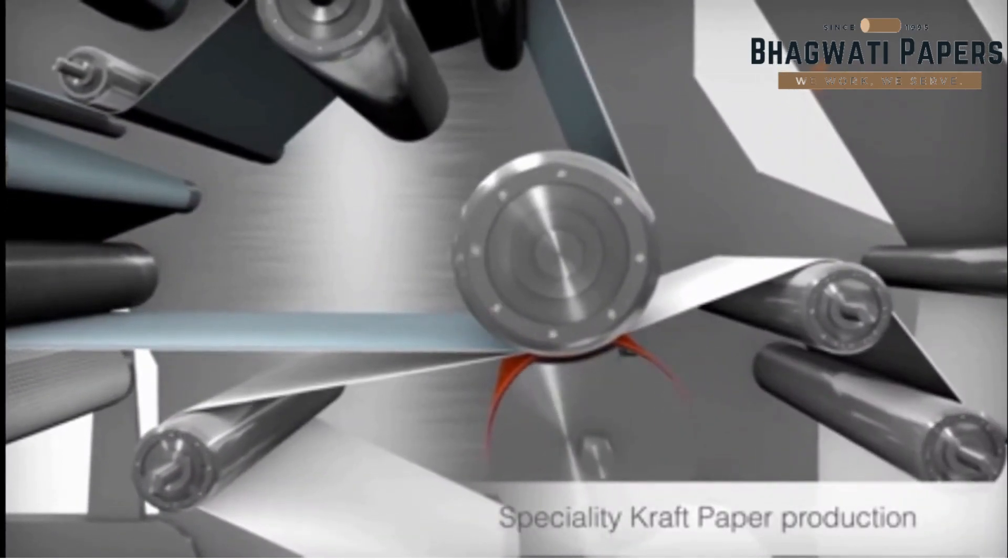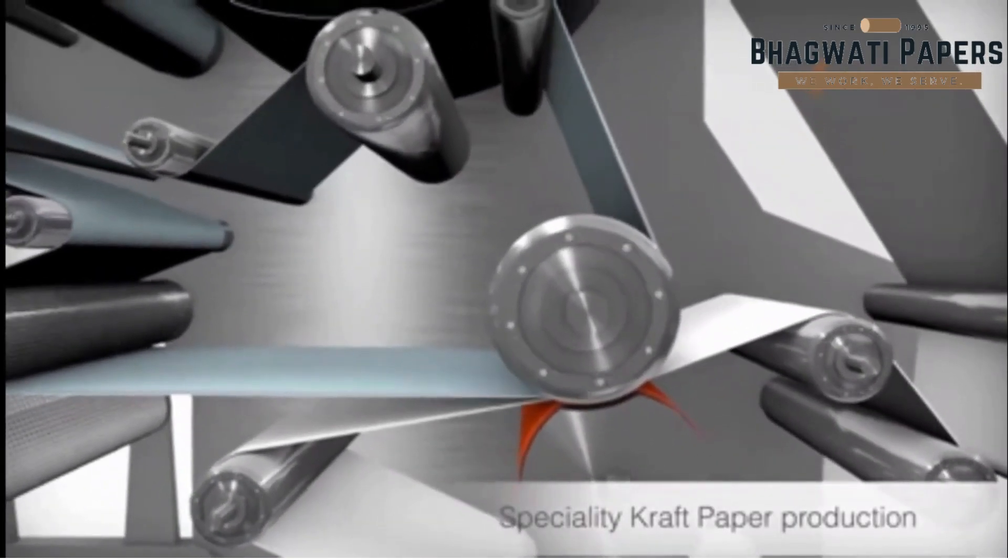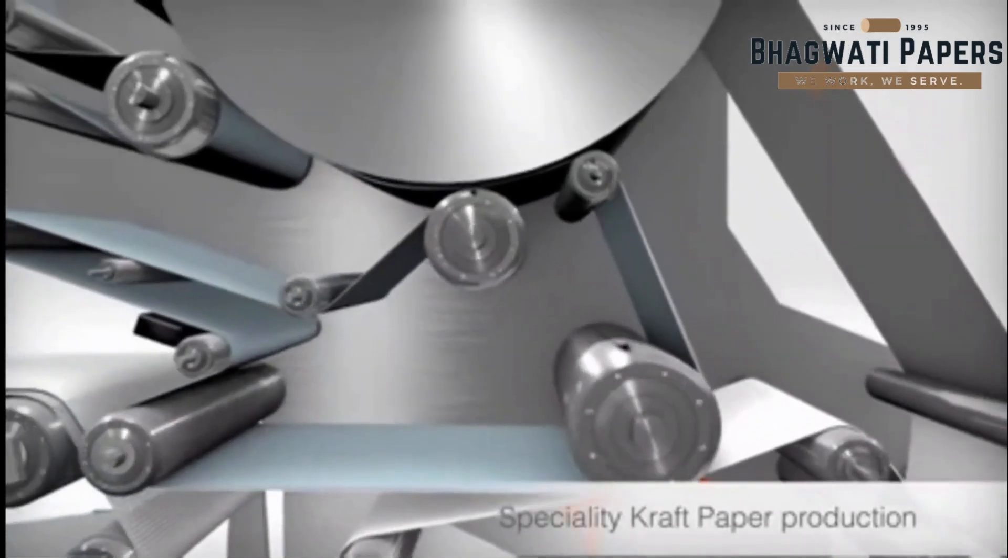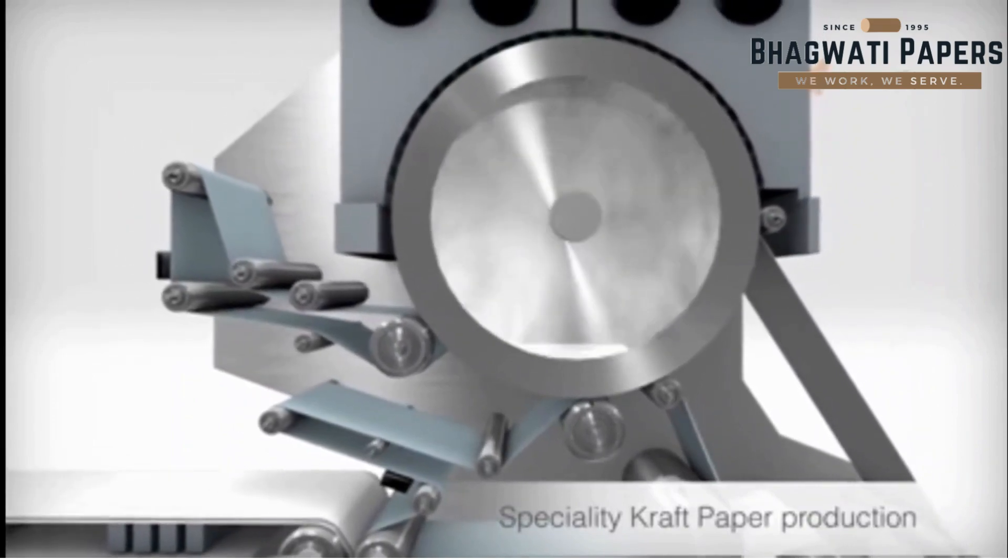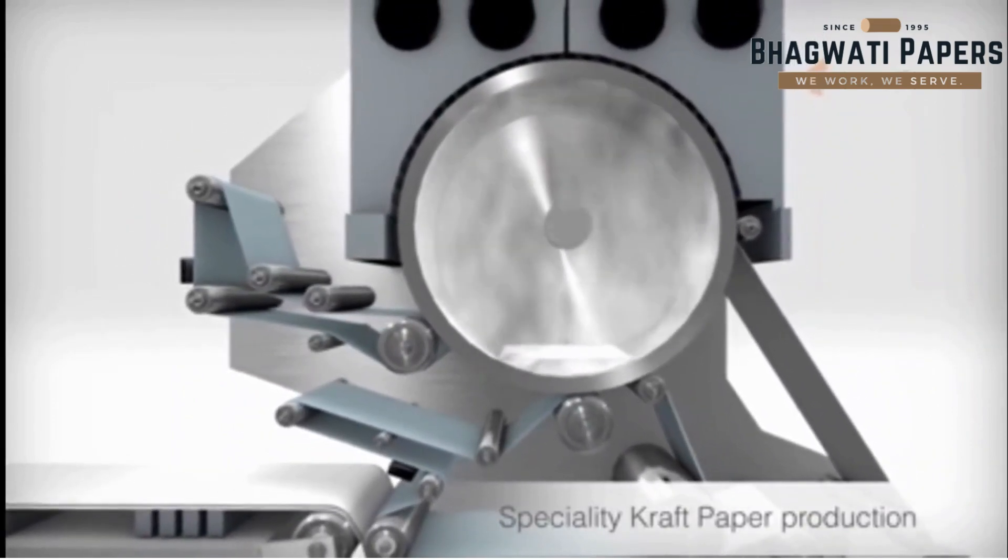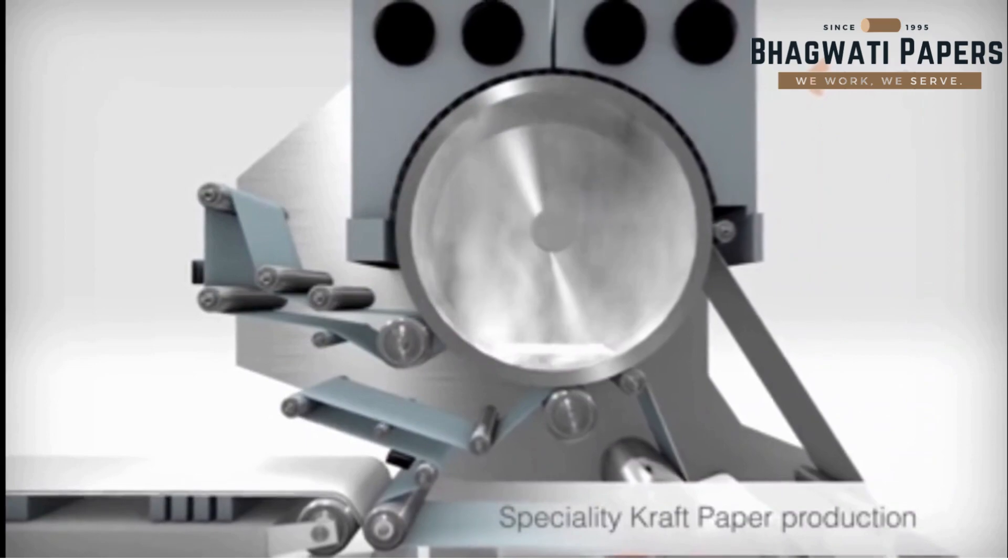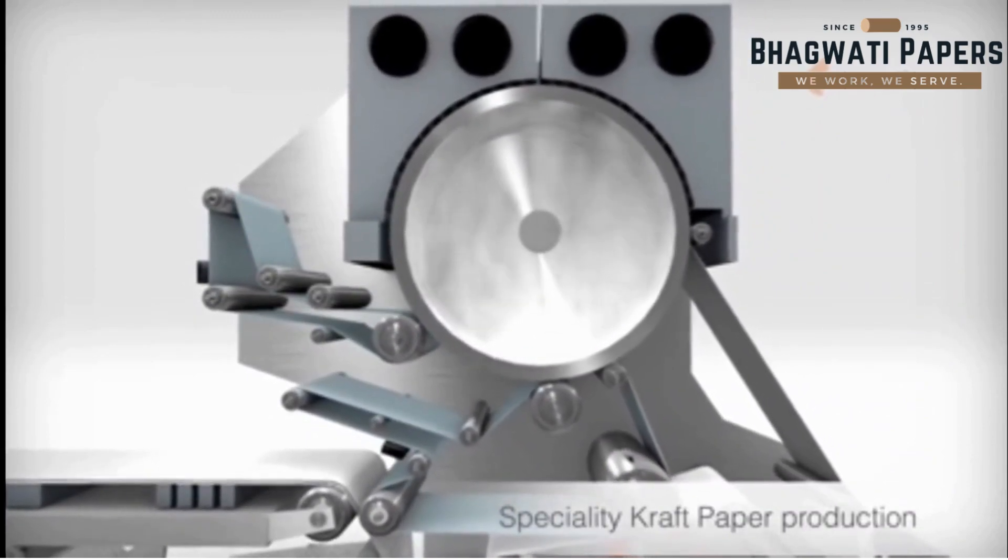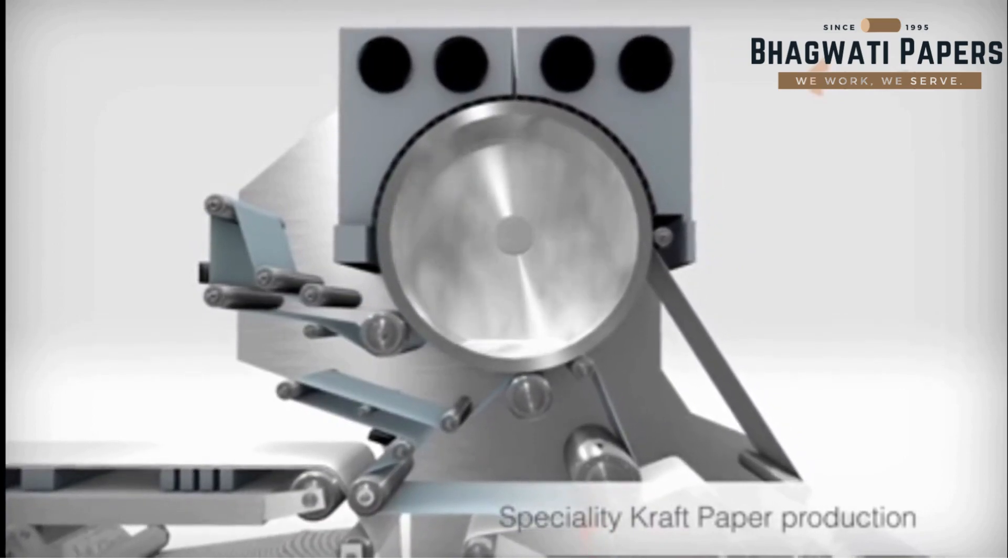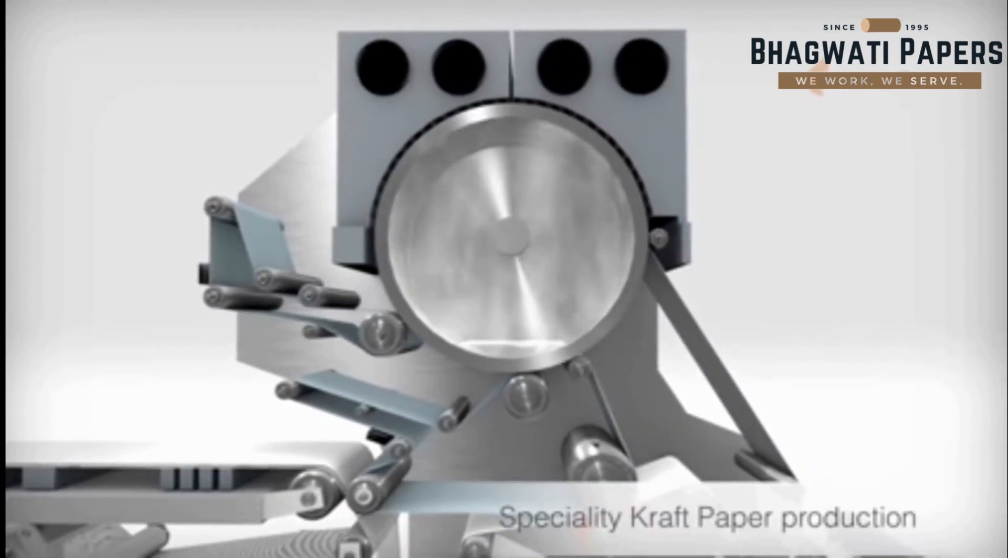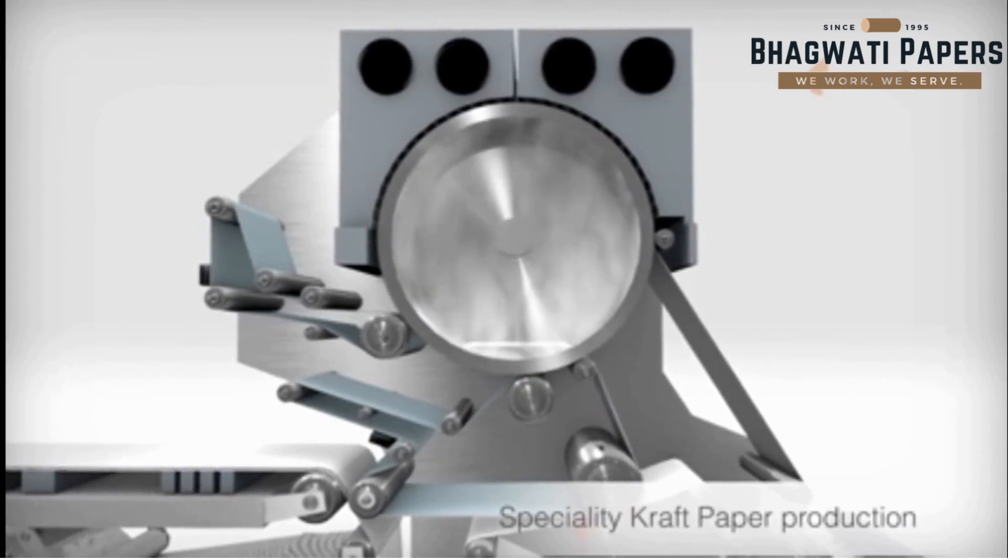After this press, the paper web is transferred to the first smoothing press, where the paper is pressed against the steam-heated, special coated Yankee cylinder. Thanks to the very smooth surface of the cylinder and the constant contact of the paper web during the entire drying process, the paper develops its characteristic very smooth, glazed surface on one side.